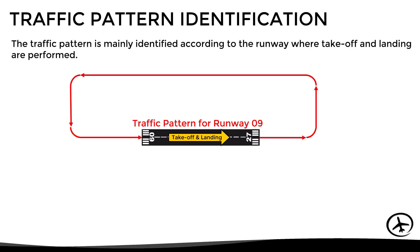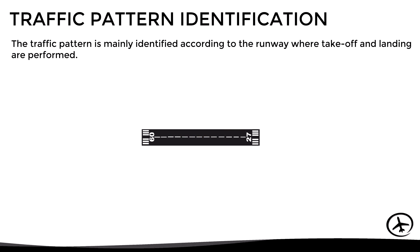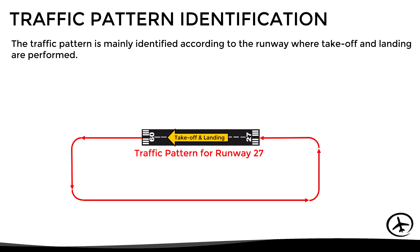For example, given this runway, we have the traffic pattern for runway 09, which would be used when takeoffs and landings are performed in that direction. On the other hand, we also have the traffic pattern for runway 27, which would be used when takeoffs and landings are performed in the other direction.